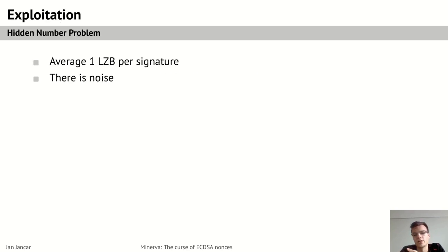Now you might be asking, yeah, okay, but how do you exploit this? It's only one leading zero bit on average per signature, so like one bit of information per signature, and there is noise, so what are you going to do about it? You are going to have errors most likely, and it seems unexploitable just from the get-go.